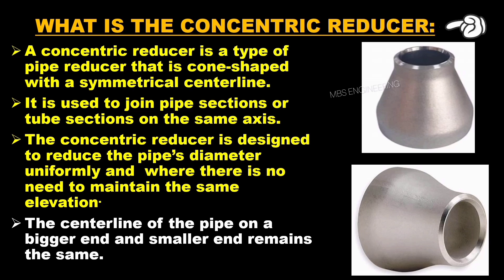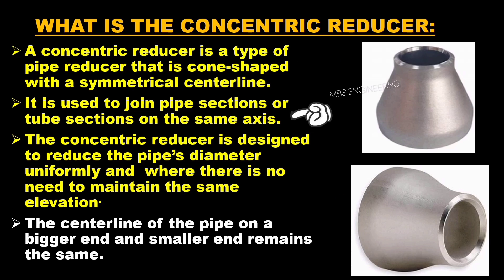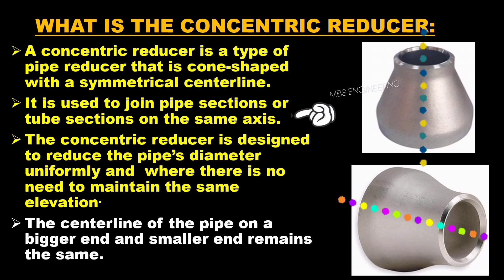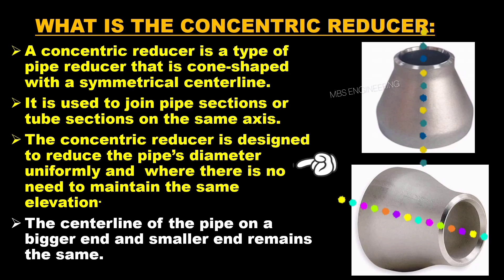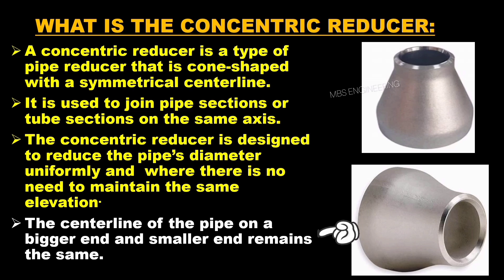A concentric reducer is a type of pipe reducer that is cone-shaped with a symmetrical centerline. It is used to join pipe sections or tube sections on the same axis. The concentric reducer is designed to reduce the pipe's diameter uniformly where there is no need to maintain the same elevation. The centerline of the pipe on the bigger end and smaller end remains the same.